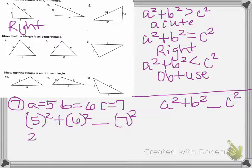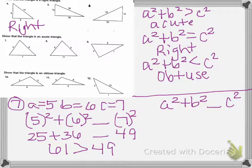5 squared is 25, plus 6 squared is 36. We don't know our sign, 7 squared is 49. We know that 25 plus 36 is 61, and we know 61 is greater than 49, so we look at our chart, and that means that this is an acute triangle.